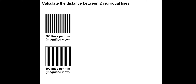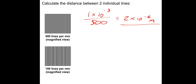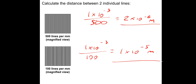To get the distance between two individual lines on the first one, we need to do one millimetre - one times ten to the minus three - and divide it by the number of lines per millimetre, so divide by 500. That gives us two times ten to the minus six metres. On the second one, same technique: one times ten to the minus three divided by 100 gives one times ten to the minus five metres. This is a very important part of the process to answer exam questions.